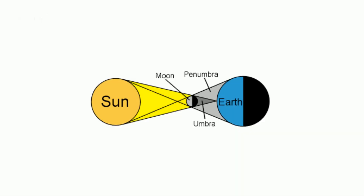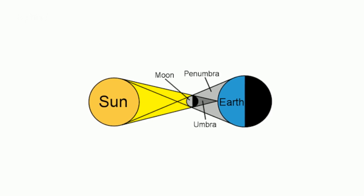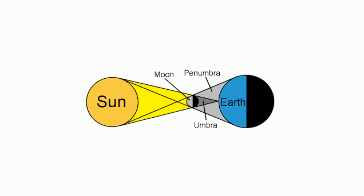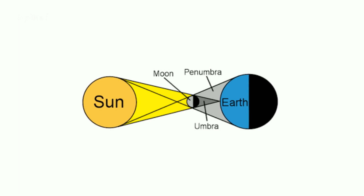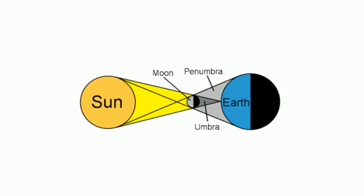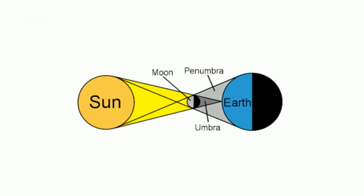It is known that the Moon's shadow has two parts: Umbra, the central region, and Penumbra, the outer region. These two parts of the Moon's shadow classify the types of solar eclipse.